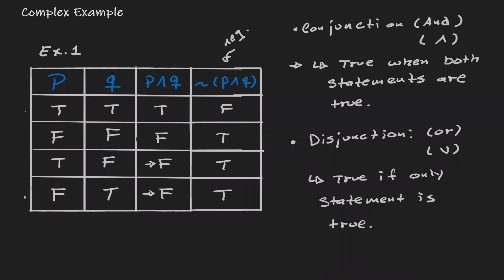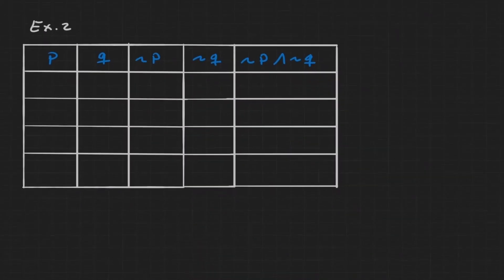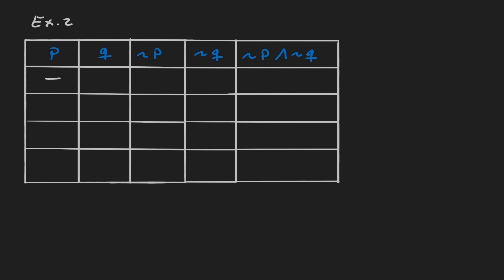Let's take a look at the last statement — a little more complex. Same idea: we start by listing all combinations. Both true, both false, first true and second false, and false and true. Now, looking at the first column, we are negating P. In the first row, P is true, so the negation is false. In the second row, P is false, so the negation is true. In the third row, P is true, so the negation is false. And in the fourth row, P is false, so the negation is true.